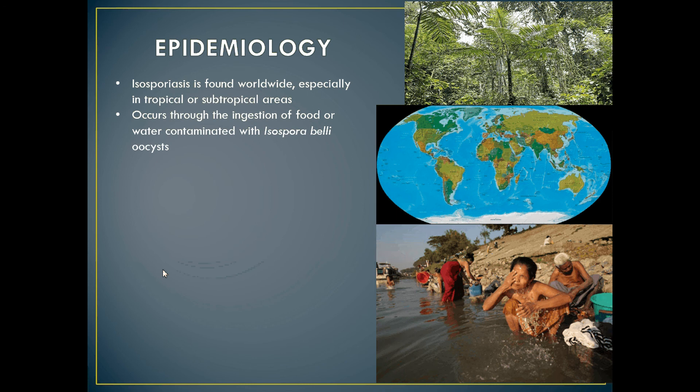Isosporiasis technically occurs worldwide but is most common in the tropical and subtropical areas of the world. It is spread when one consumes or ingests food or water contaminated with a mature, fully sporulated oocyst. It is commonly observed in immunodepressed or immunocompromised individuals — those with an impaired immune system — for example, a patient with AIDS.